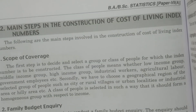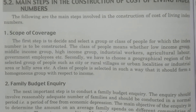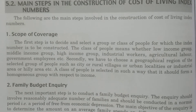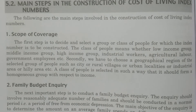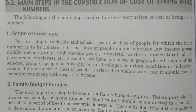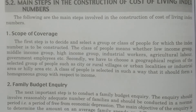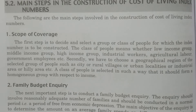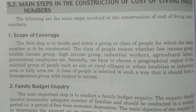Now I discuss the main steps in the construction of the cost of living index number. There are five important points: scope of coverage, family budget inquiry, selection of commodities, collection of retail prices, and method of constructing the cost of living index number based on a particular formula.